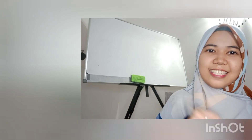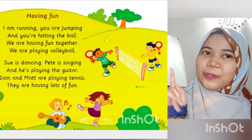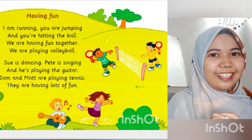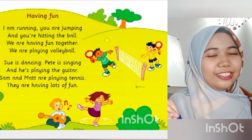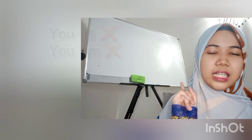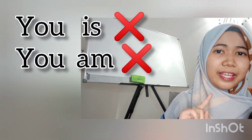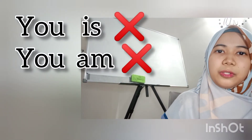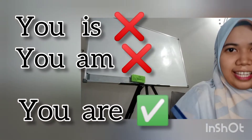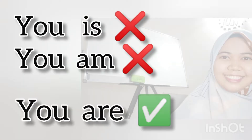The next example is 'you are jumping.' 'You' is a plural noun, so we need to use 'are.' Never write 'you is' or 'you am' — it's wrong. We need to put 'you are.' You are jumping. Understand?